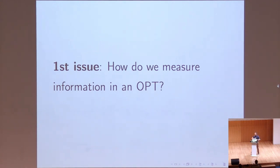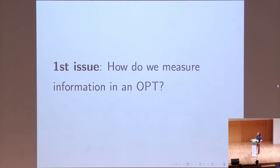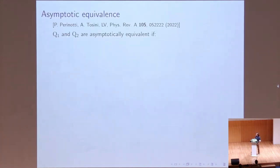The first problem we have to cope with is how to measure information in a generic OPT. In classical and quantum theories, we do this by using bits and qubits respectively, but it might be the case that for a generic OPT the equivalent system of the bit or the qubit does not exist. Let's see how we manage to set a class of theories in which information can be measured.